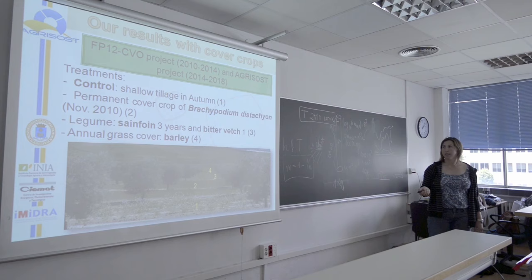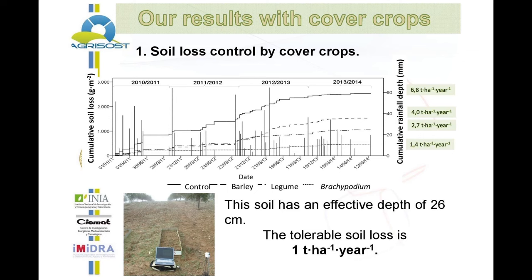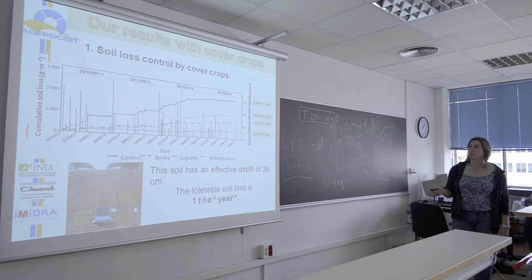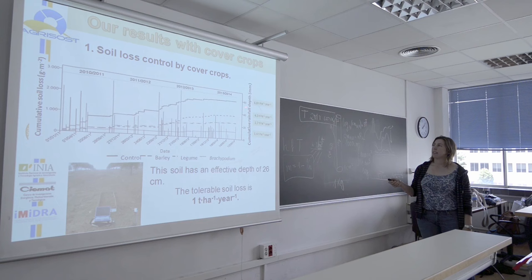These graphs show the results of cumulative soil loss from January 2011 to October 2014. The column shows the rainfall depth — not cumulative, just single rainfall events. The line shows the results for control, then legume, barley, and Brachypodium. This is cumulative soil loss after each rainfall. You can see that the control is losing soil every time there's rain.